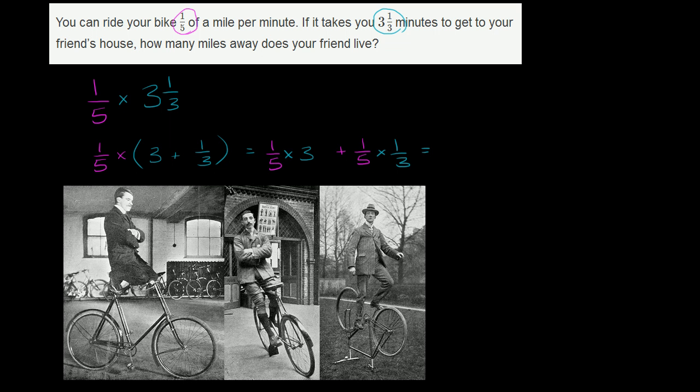well, we could rewrite 1 fifth times 3 as 1 fifth times 3 over 1. That's what 3 really is if we wrote it as a fraction. And then, of course, we're going to have plus 1 fifth times 1 third. Times 1 third. And let's just think about what each of these evaluate to.